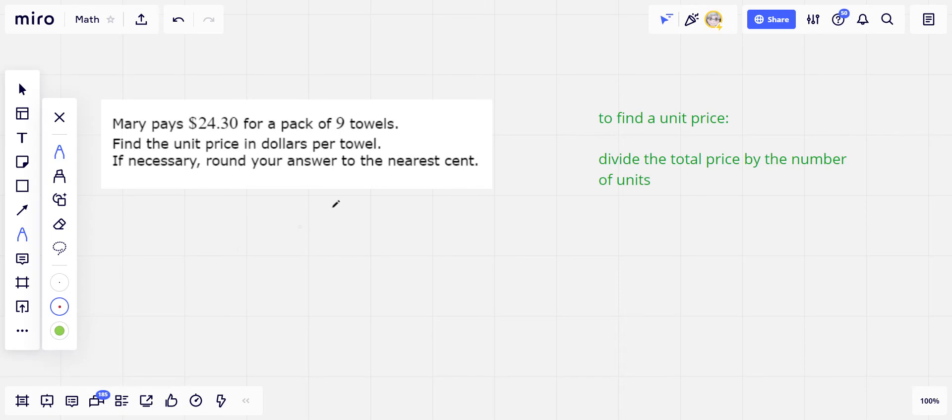In these problems, we're trying to find what's called a unit price, and this is really useful. Let's say you're in a grocery store and there are two different products with different numbers of things in each bag or box, and you want to figure out what's the better deal. The unit price is a way of knowing how much each little thing costs.